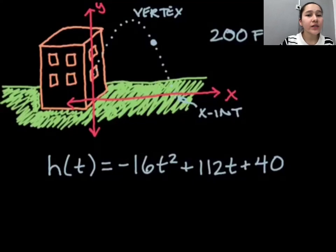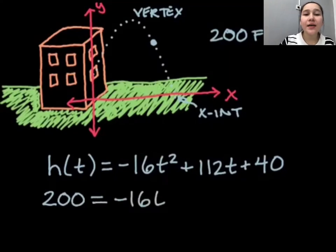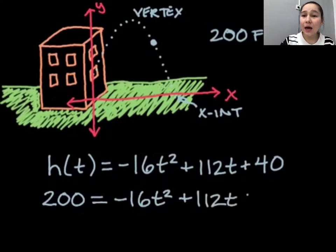So instead of just plugging in 200, I'm going to set this entire equation equal to 200. This is going to give me 200 equals negative 16t squared plus 112t plus 40. And that's the equation I need to solve. When I find t, I find my time.